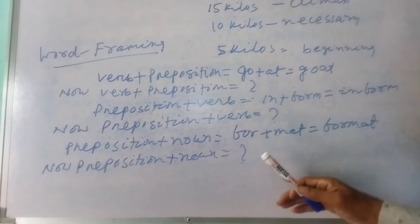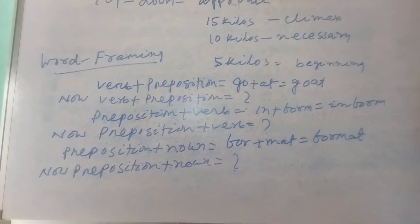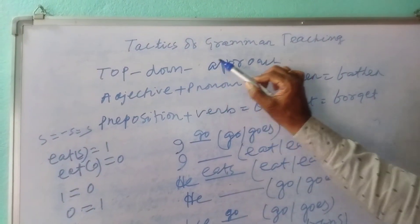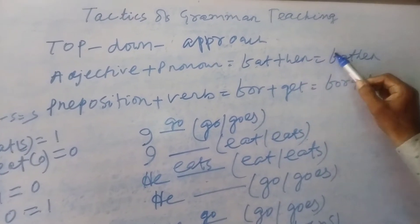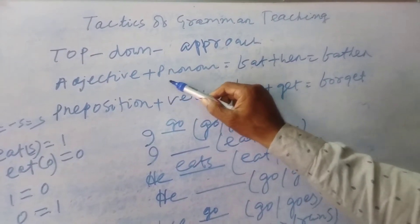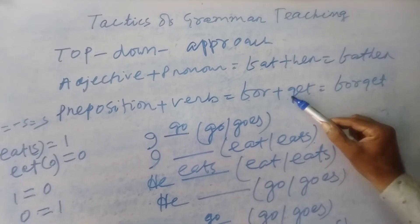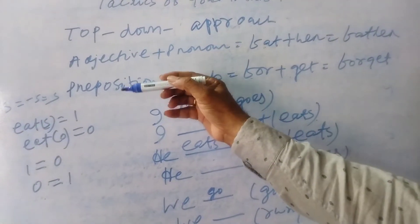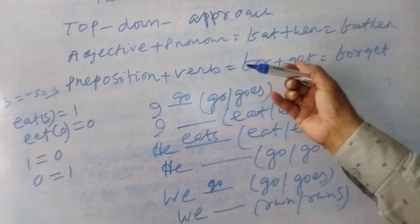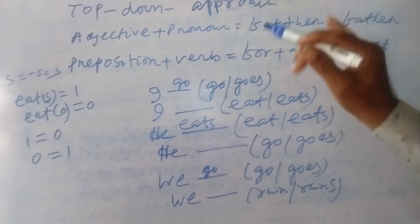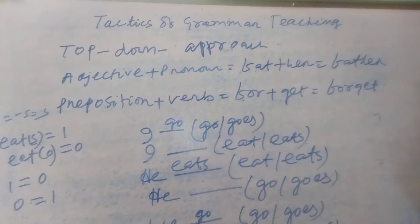Now preposition plus noun — students have to do this. Let me give four to five more examples. Top-down approach: adjective plus noun — 'fat' plus 'her' gives 'father.' Students are asked to form another sentence using adjective plus noun. Preposition plus verb gives 'forget.' Again they tell another preposition plus verb. In this fashion: noun plus noun, verb plus noun, noun plus preposition, preposition plus pronoun — things will be much easier. This is the noticing formula — follow the examples and do the answers.